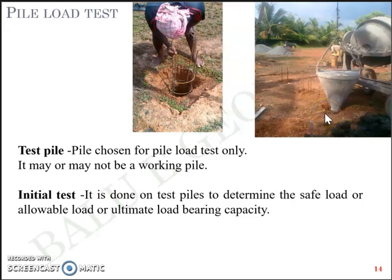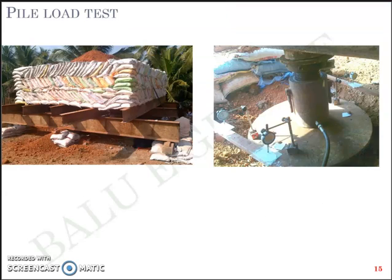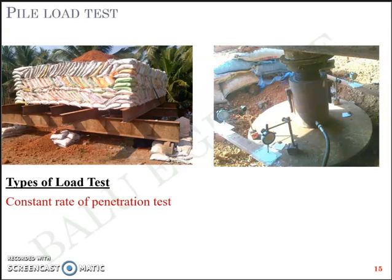Once you've completed the casting and waited for the concrete to set and harden, you carry out what is called a pile load test. These are the different types of pile load tests: constant rate of penetration test, cyclic load test, lateral load test, and pull-out test. These are briefly the different types of pile load tests, though you have other options as well.